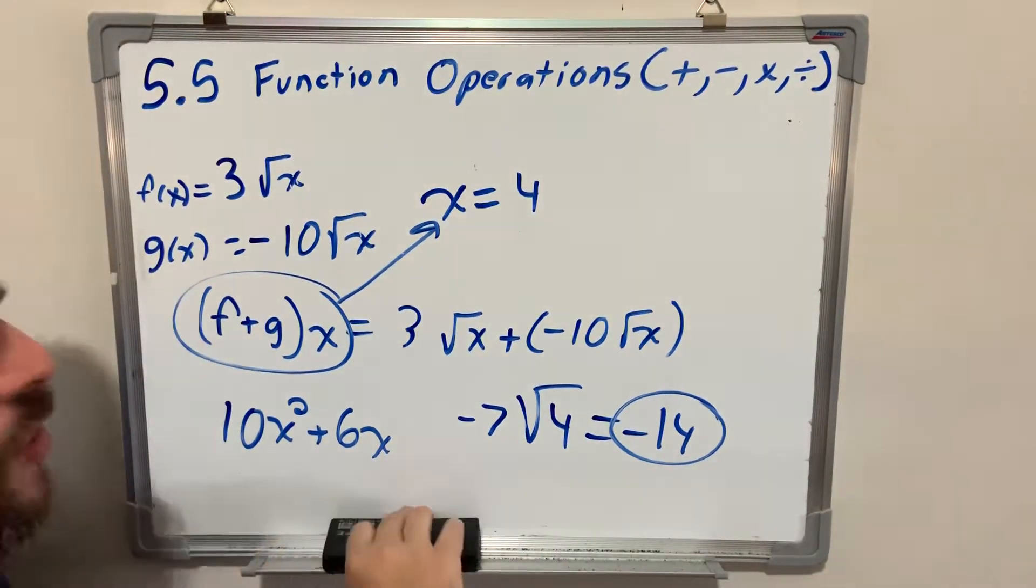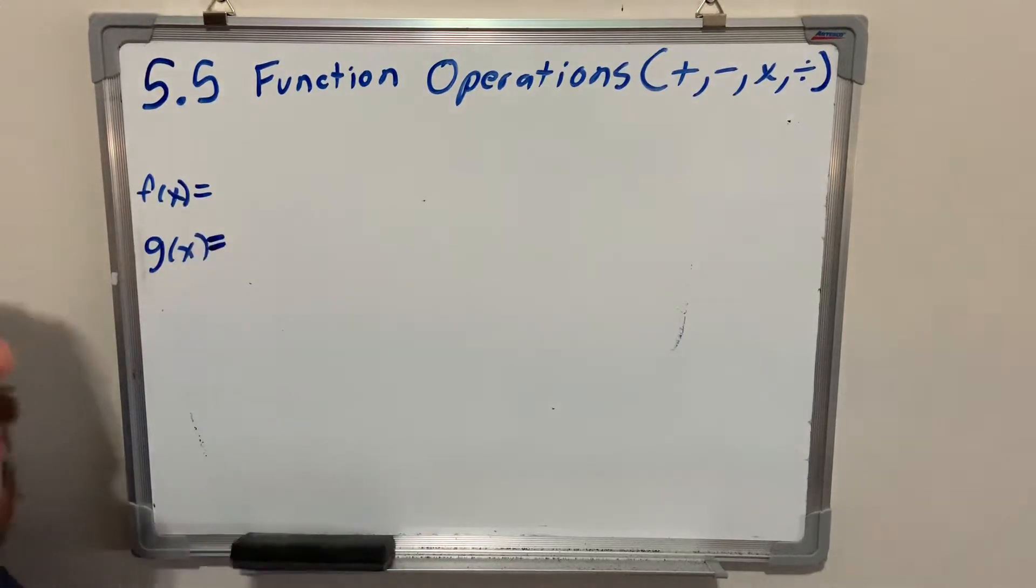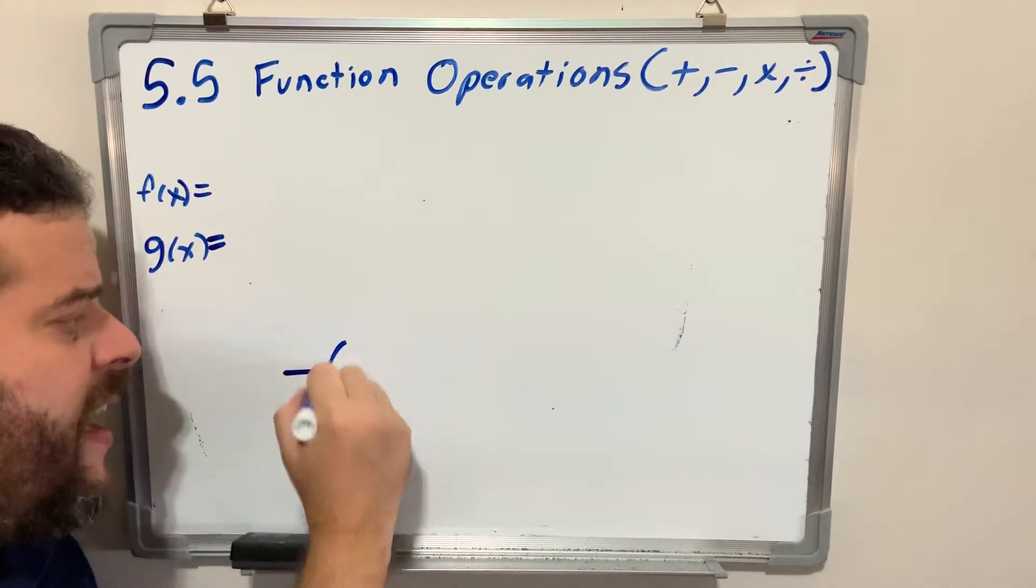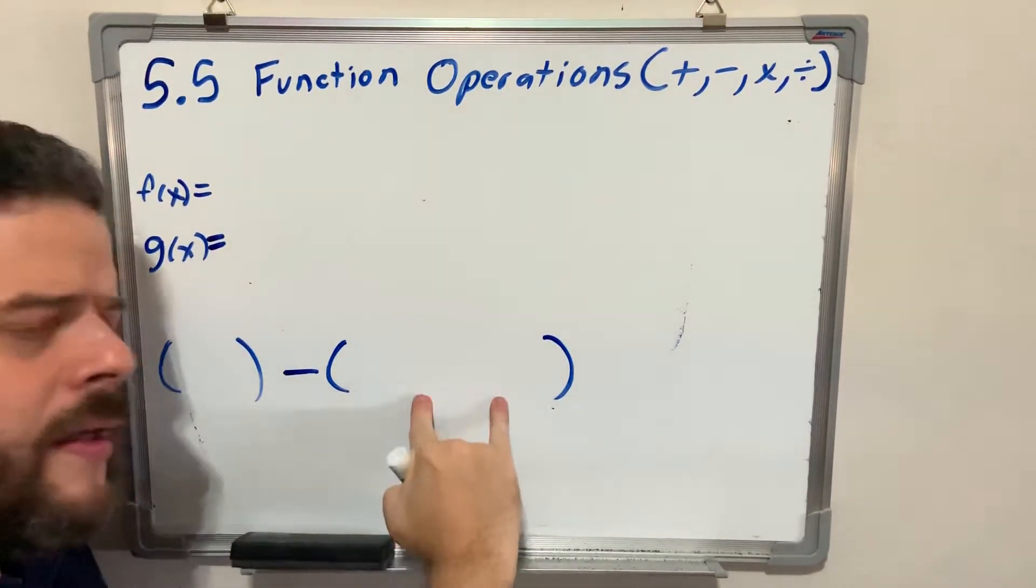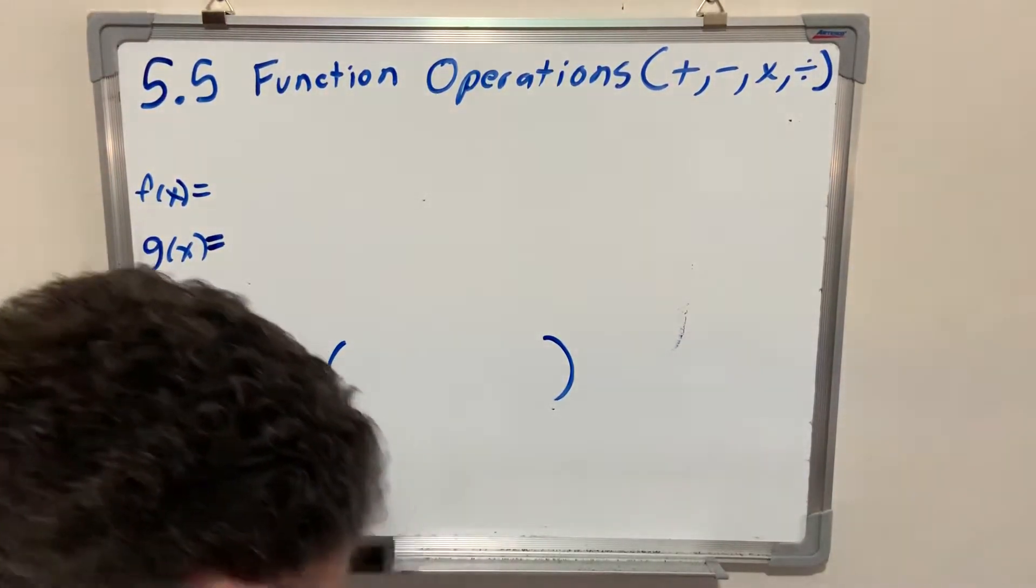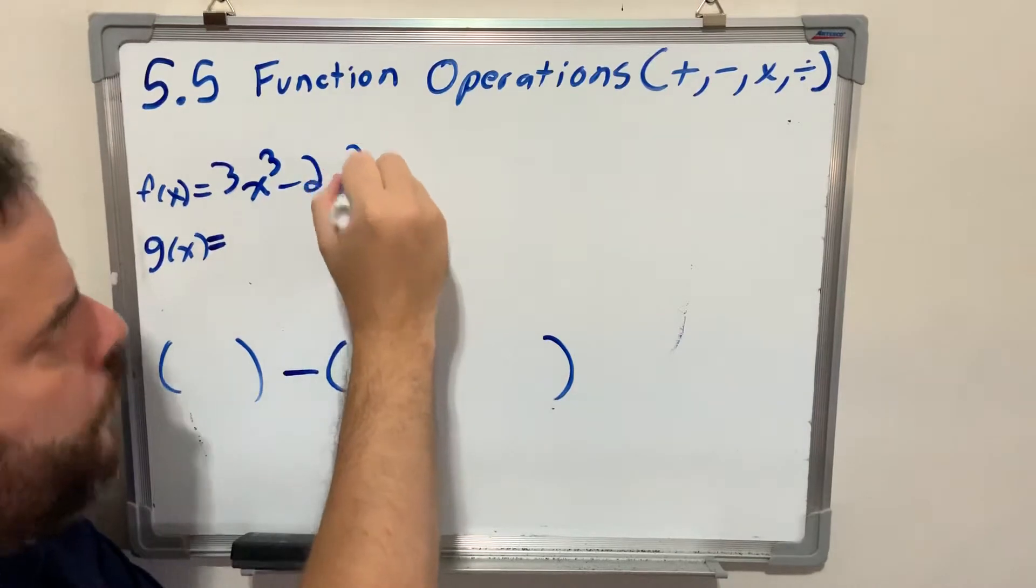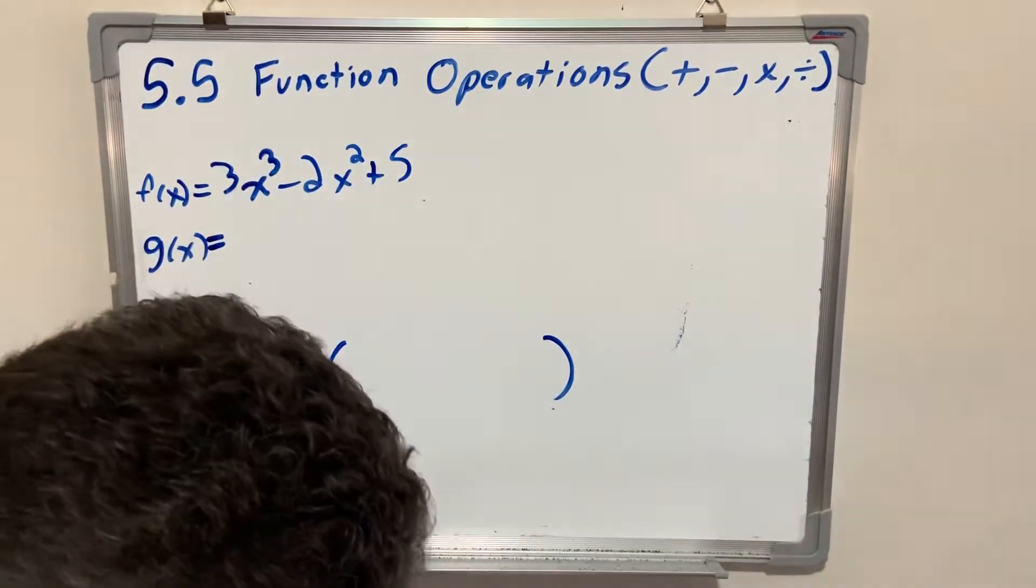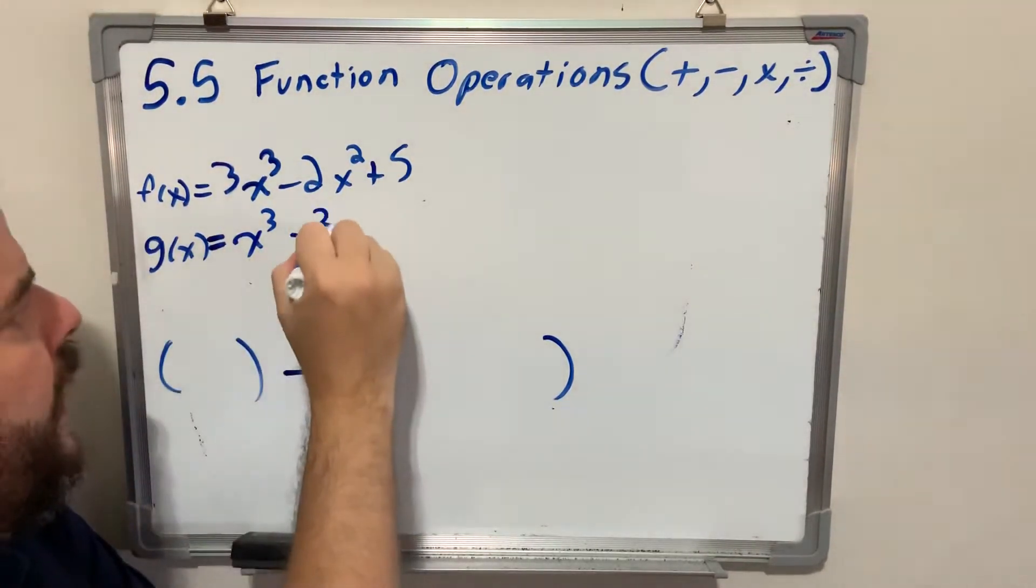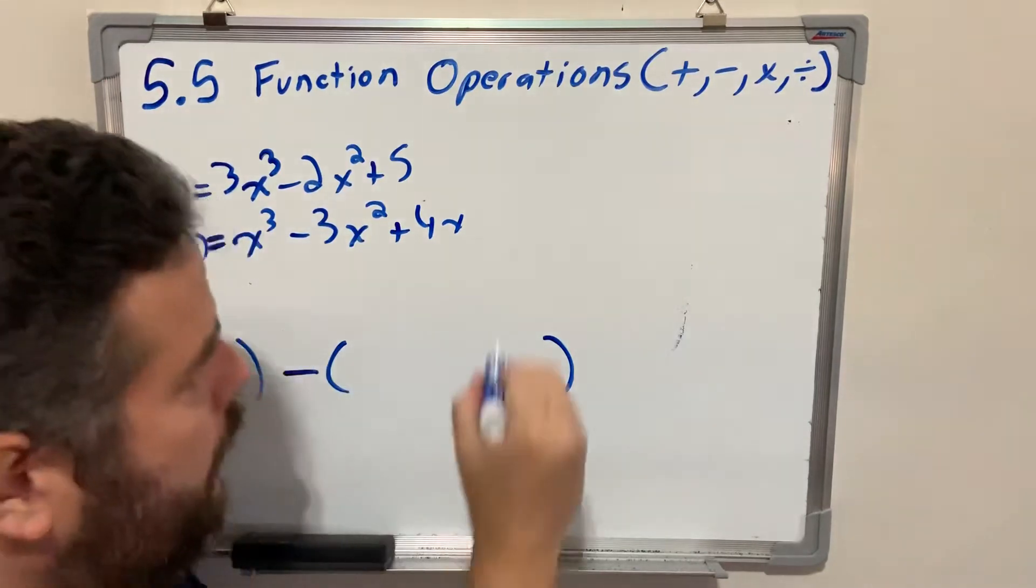So that's addition. No changes happen, we just add normally. Now let's go over subtraction. This is the exact same thing as subtraction of polynomials. You're going to change the sign of everything that you are subtracting by. Let f of x be 3x cubed minus 2x squared plus 5, and g of x is x cubed minus 3x squared plus 4x minus 2.